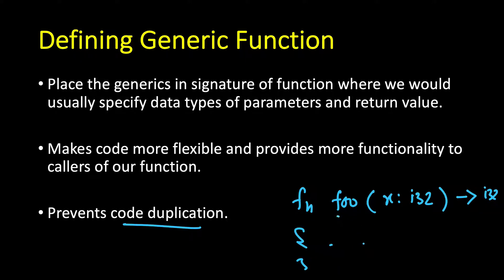Let's say we need the same function for float as well — then we'd need to define it again. A generic function will help us define it just once and use it with multiple types.